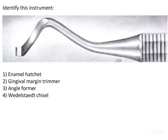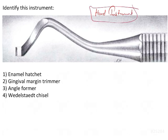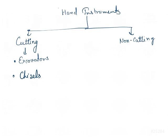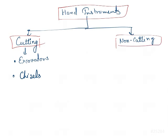We have to identify this instrument and understand the classification of hand instruments used in operative dentistry. Hand instruments can be cutting instruments or non-cutting instruments. The cutting ones include excavators, chisels, and other instruments, while the non-cutting instruments include mirrors, explorers, probes, and amalgam condensers.